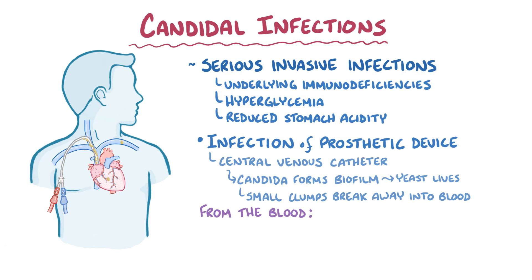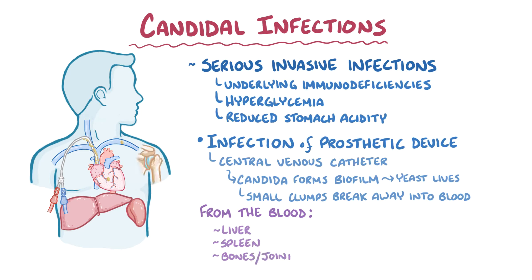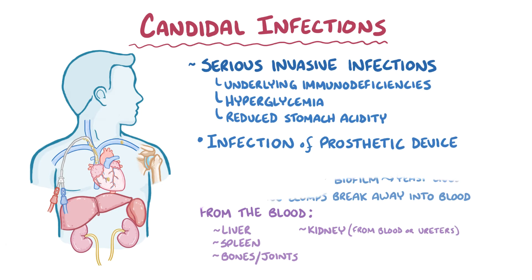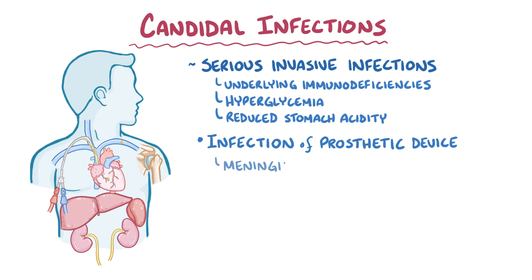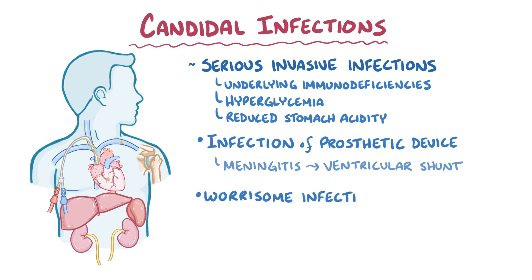From the blood, Candida can also cause infections in the liver and spleen, as well as the bones and joints. It also likes to cause infections in the kidney. The Candida can reach the kidney from the blood, as well as by going up the ureters after a urinary tract infection. Candida can also cause meningitis, in particular if it infects a device in that space like a ventricular shunt. What's more is that Candida can cause particularly worrisome infections of the eye.